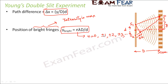When n equals +1, you get y equals lambda·D/d, which gives the position of the next bright fringe above the center. When n equals −1, that gives the bright fringe below the central fringe. Similarly, n equals ±2 gives bright fringes further out, and so on, giving bright fringes at specific locations.